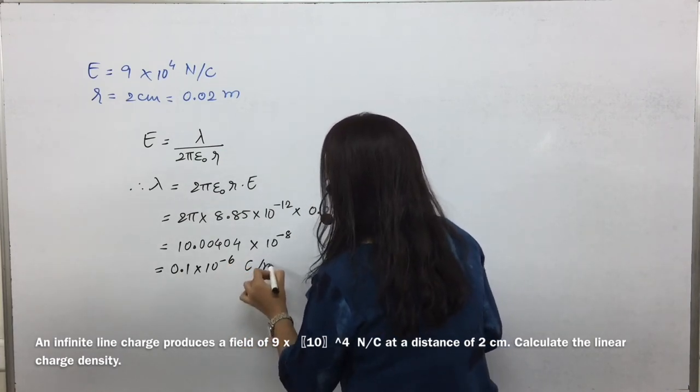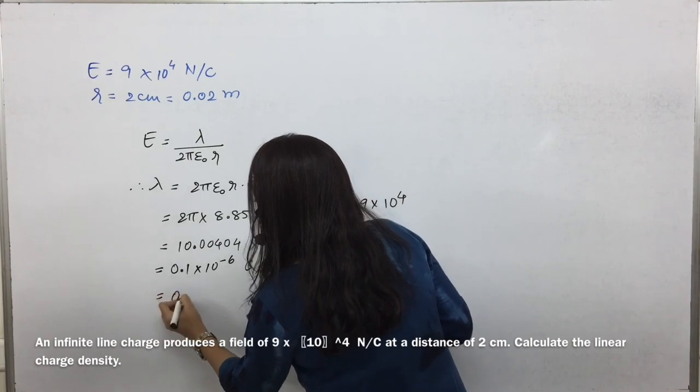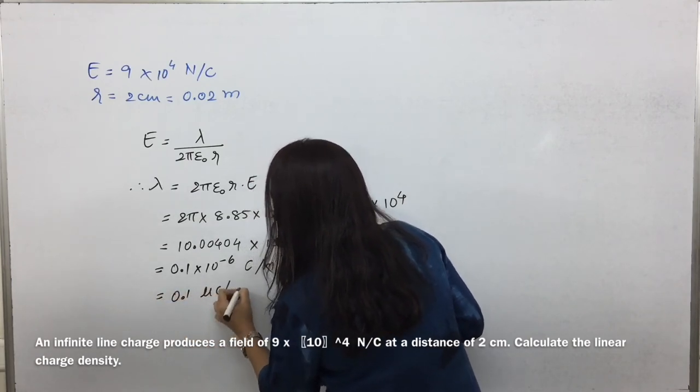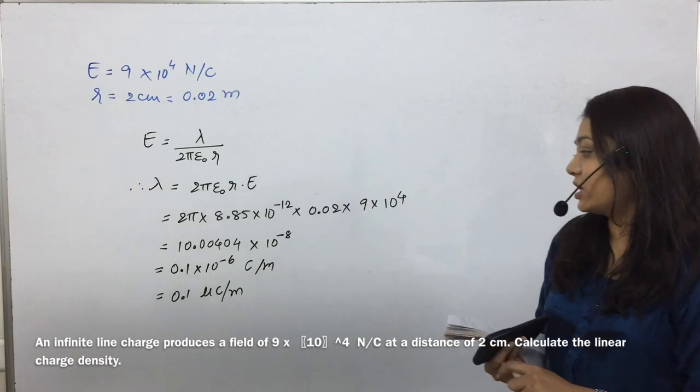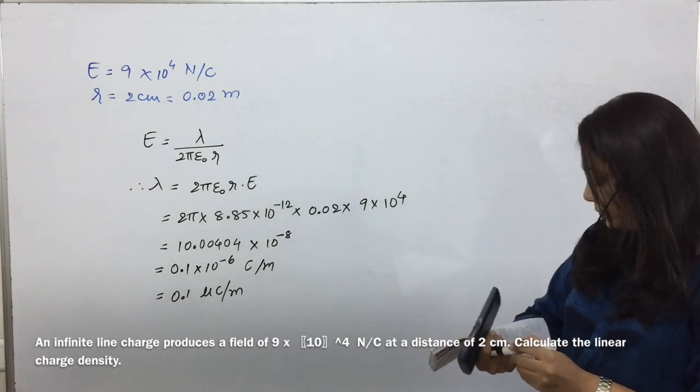Yes, coulomb per meter. And this ends as 0.1 micro coulomb per meter, the value of line charge density. Please write down.